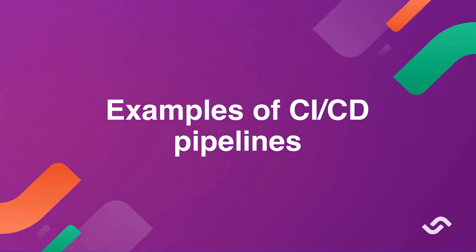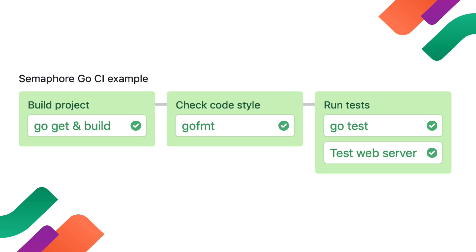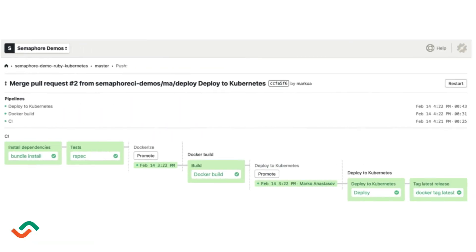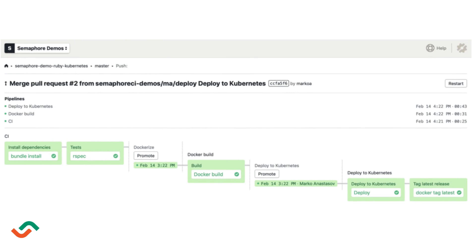Here are some examples of a CI/CD pipeline. A pipeline can start very simple — here's an example of a Go project pipeline that compiles the code, checks code style, and runs automated tests in parallel jobs. And here is a more complex example of a pipeline that builds, tests, and deploys a microservice to a Kubernetes cluster.